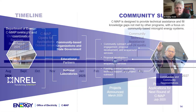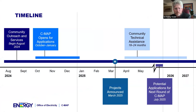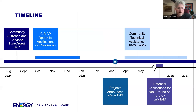Our timeline for the solicitation: the CMAP application is open now, with the plan to go through to the end of December — the 20th of December deadline. If that deadline is a problem for communities, we'd certainly like to hear from you. Projects will be announced in March, with the contracting process targeting the May-June timeframe for when contracts are in place, and then community support and technical assistance to projects will launch around that time.